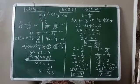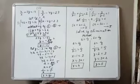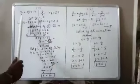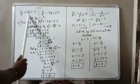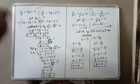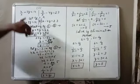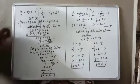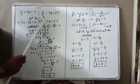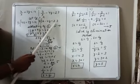Let us study two more questions — the third and fourth parts of question number one. In the third part: 4 upon x plus 3y equal to 14, and 3x minus 4y equal to 23. Here only x is in the denominator, not y. So we consider 1 upon x equal to a only — there is no need to take 1 upon y as b because y is already in the numerator. The first equation becomes 4a plus 3y equal to 14, and the second becomes 3a minus 4y equal to 23.